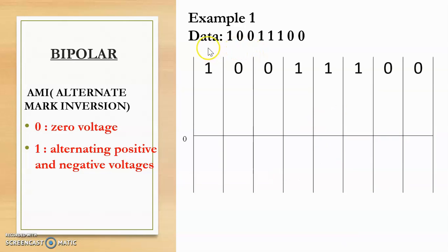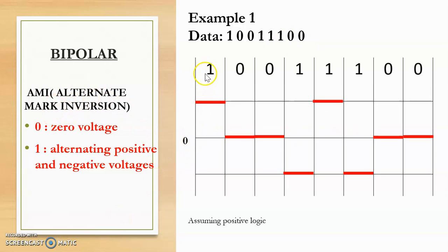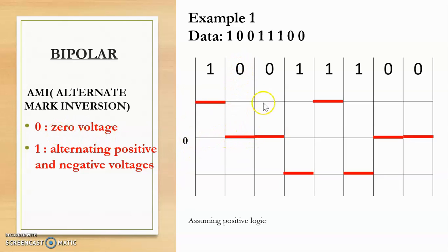Say for example we are given the data 1 0 0 1 1 1 0 0 and we need to convert it into a digital signal using AMI line coding. The first bit is 1, meaning alternating positive and negative voltages. Since this is the first bit, we may start from either side; here we assume positive logic, so we start from the positive side. The next bit is 0, so it will be on the reference line, and again the following bit is 0, also on the reference line.